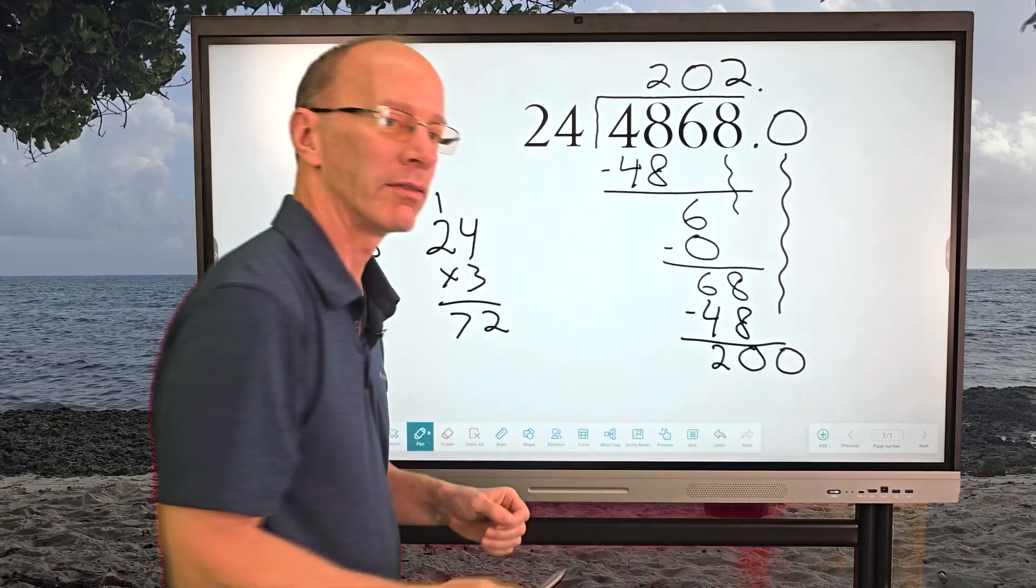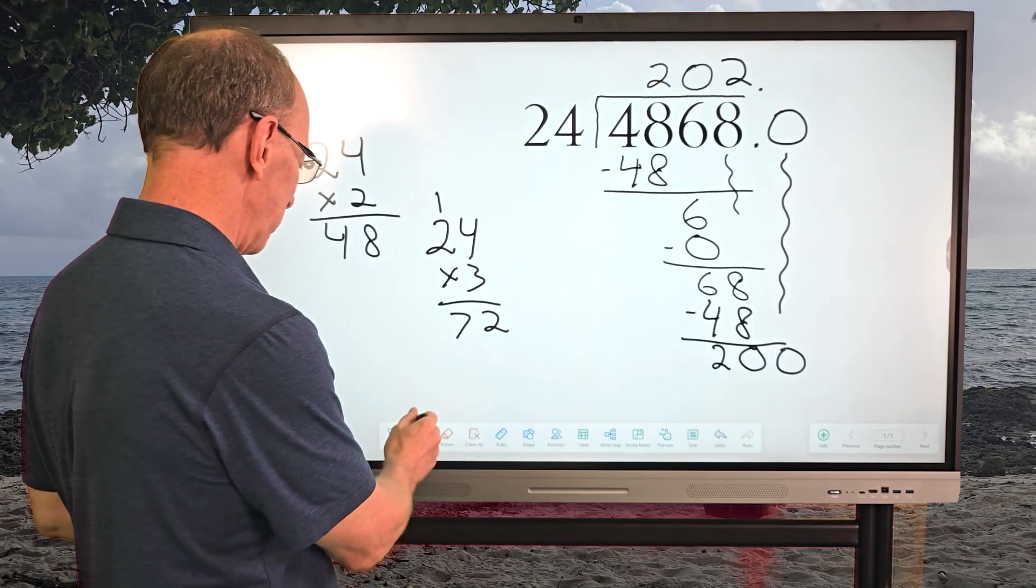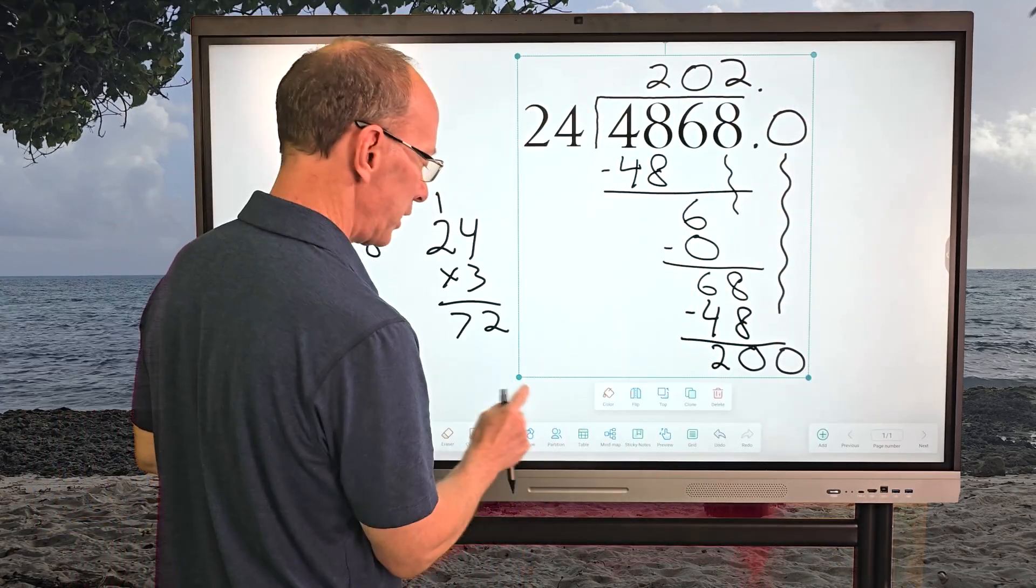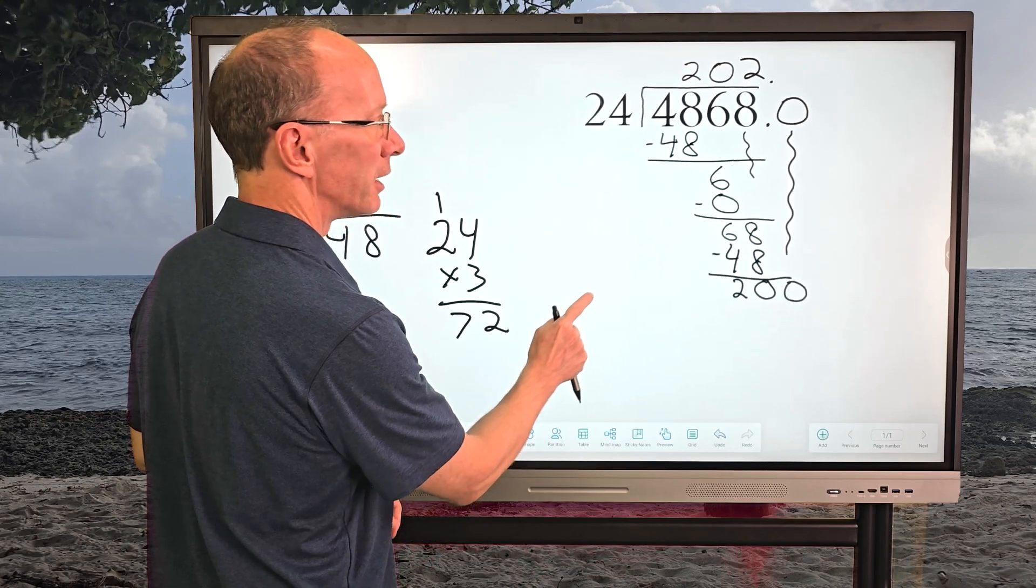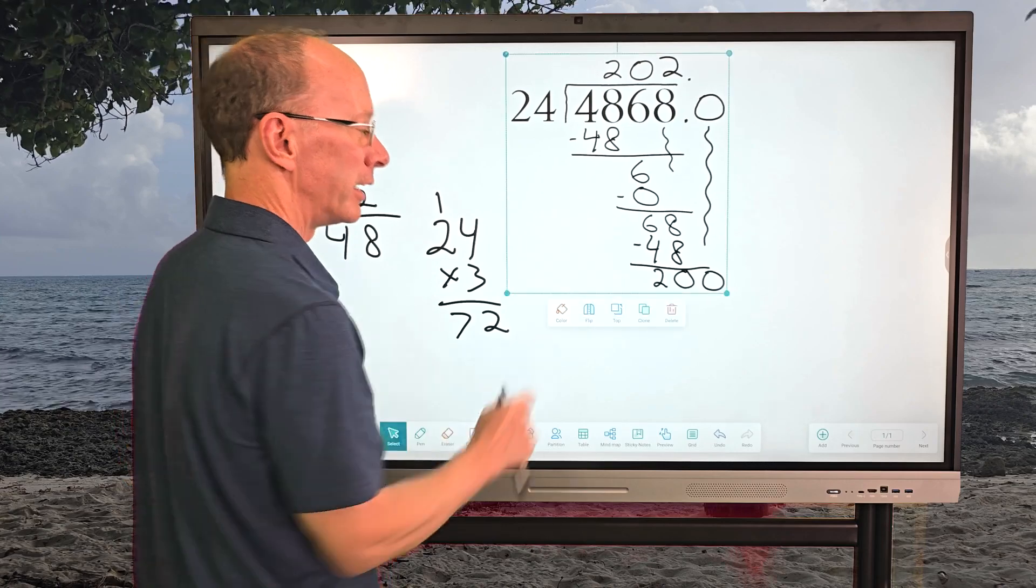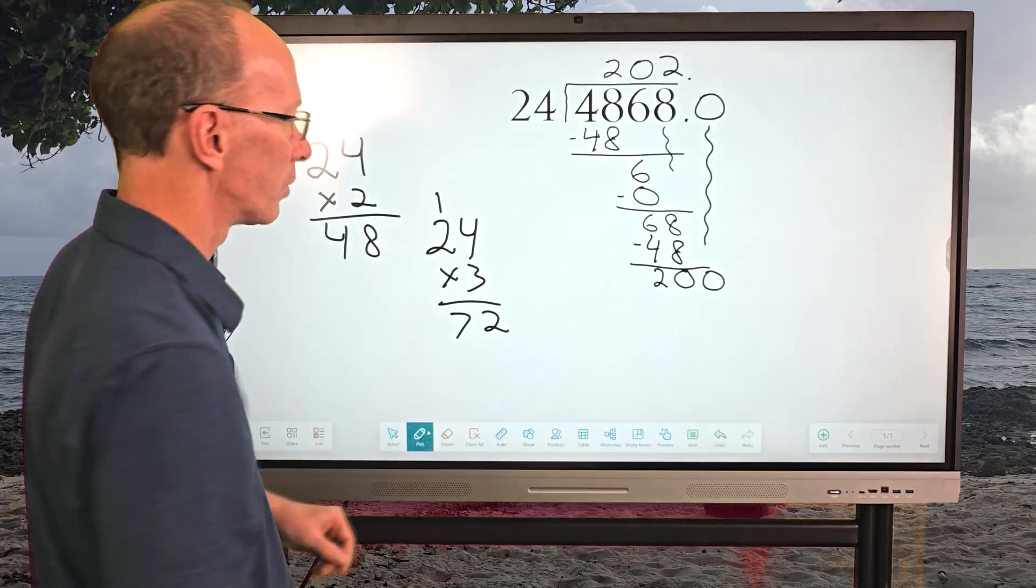So let's put a zero right here and then bring that all the way down right here. So now I have 200. And again, I'm going to make this problem just a little bit smaller. Starting to run out of screen room here, aren't I? All right. Let's bring that over here. All right, now we got plenty of room to work with here.